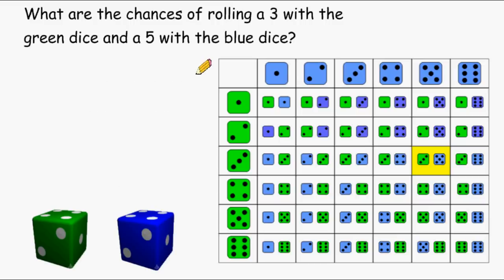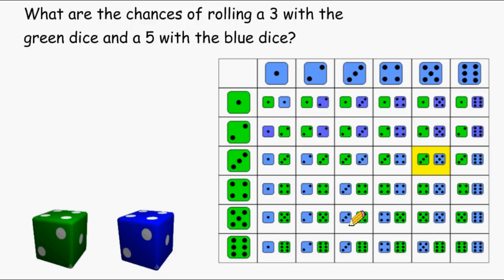This probability matrix shows all of those 36 possible outcomes. If you take a look right here, this is the one outcome out of the 36 possible outcomes where we have a 3 for the green dice and a 5 with the blue dice. Now if you take a look over here, we cannot consider this outcome because this is a 3 with the blue dice and a 5 with the green dice.